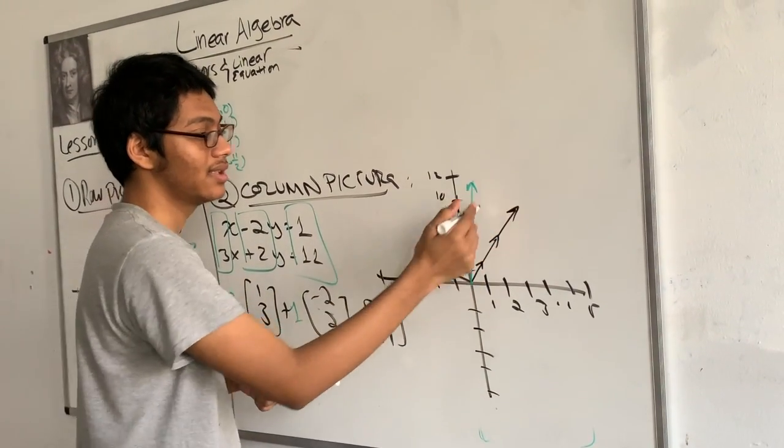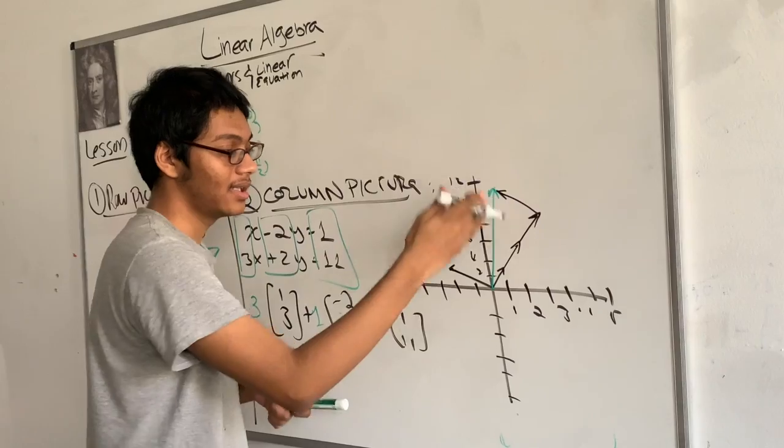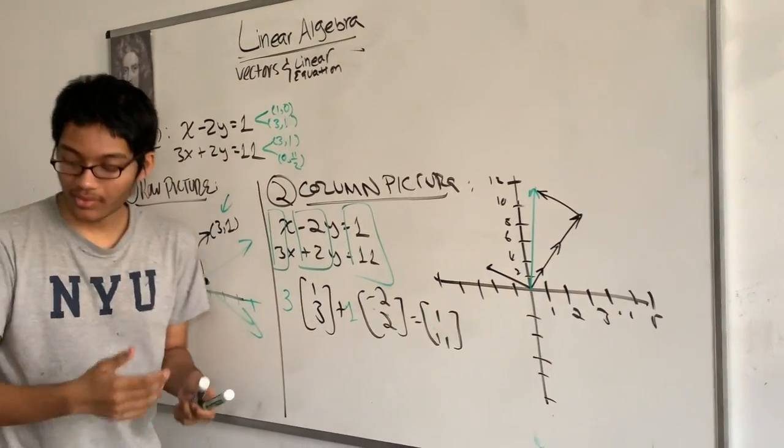So remember, adding vectors means translating this. And you can see, it gives me the green vector. So as you can see,